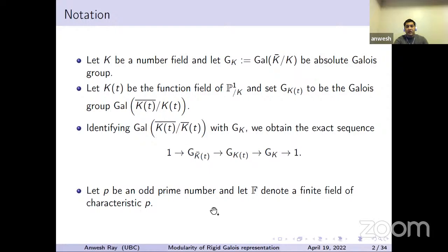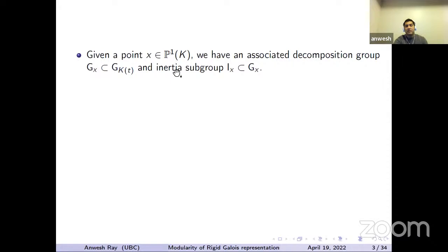P is going to be an odd prime number throughout, and F will denote a finite field of characteristic p. Given a point in P^1 of K, we have an associated decomposition group. This decomposition group is defined after we choose a prime lying above X inside the algebraic closure of the function field, and we have the associated inertia group.